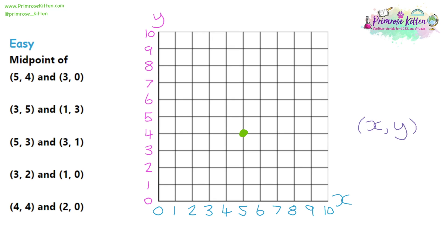If you're not sure about this, go and have a look at the coordinates video first. The second coordinate is (3, 0), so that's 3 across and 0 up. To find midpoints using a graph, find the two coordinates, join them with a straight line, and find the coordinate exactly in the middle. Below that midpoint is a 4 for the x-coordinate, and to the left is a 2 for the y-coordinate. So the midpoint is (4, 2).